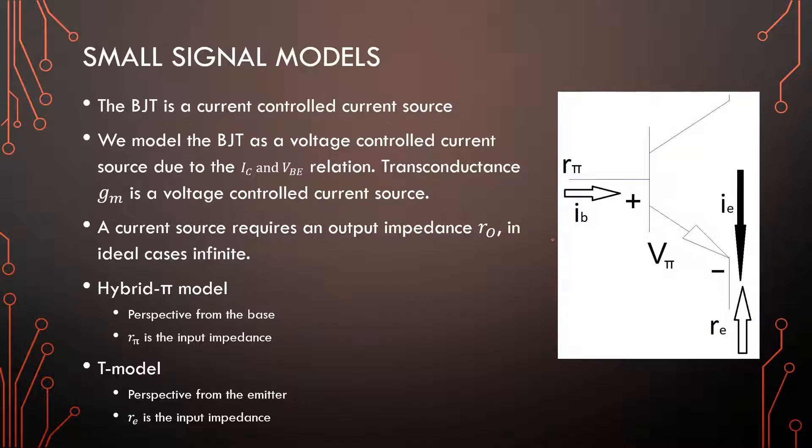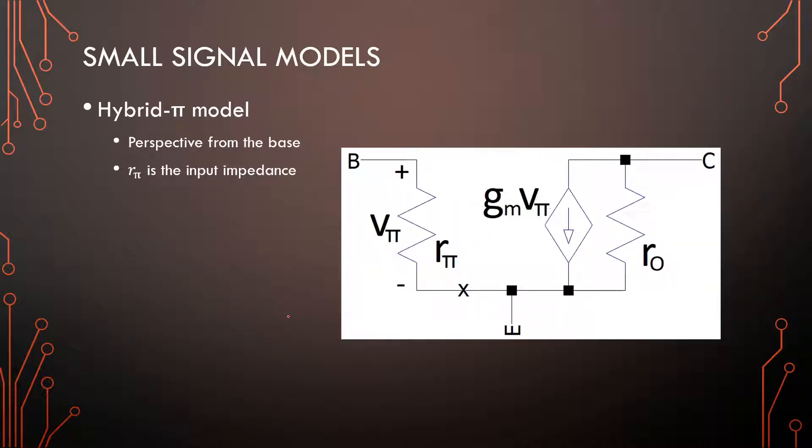And for us to convert the current flowing into our transistor, or V_pi, into something useful, we need an input resistance. So from the base side, that will be called r_pi, and if we're viewing from the emitter side, that will be called r_e, or the emitter resistance. So the two models are based off perspective.